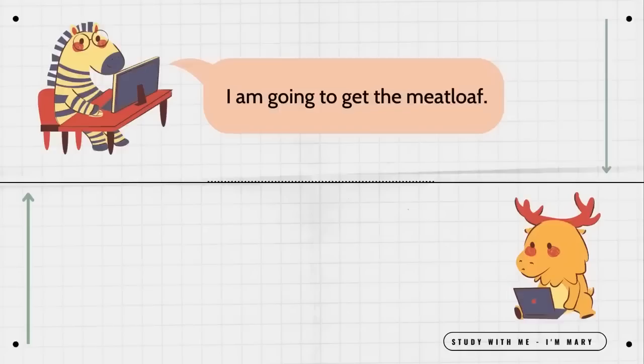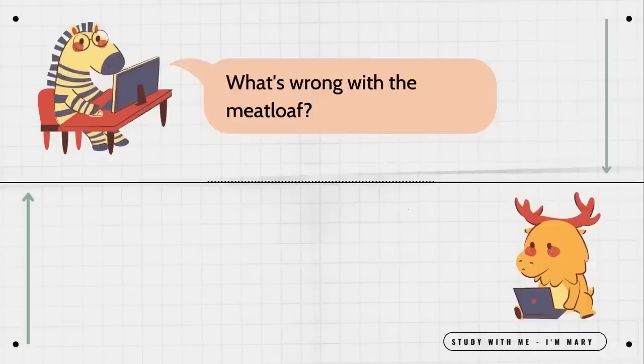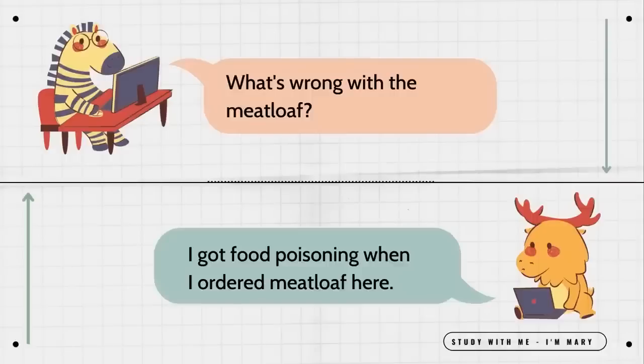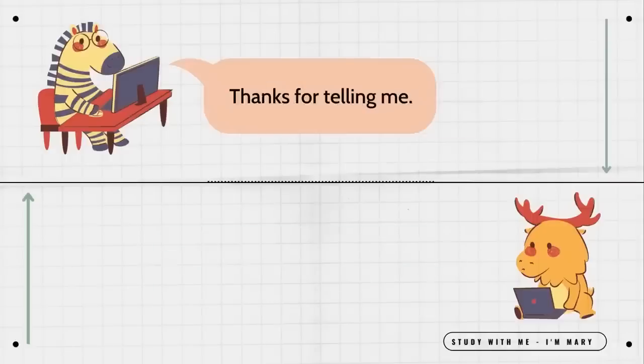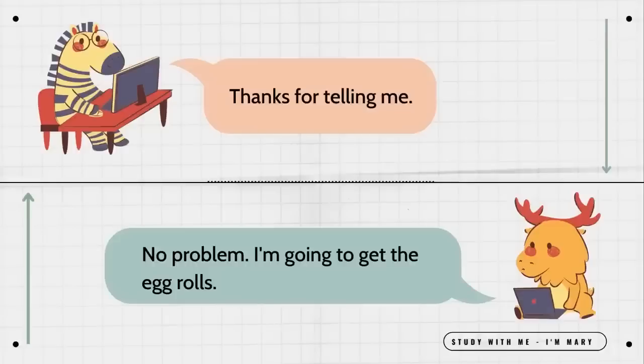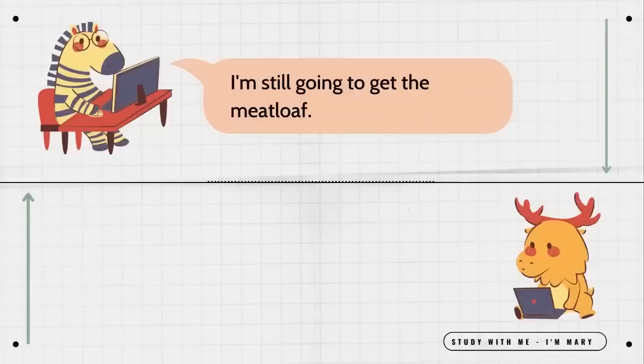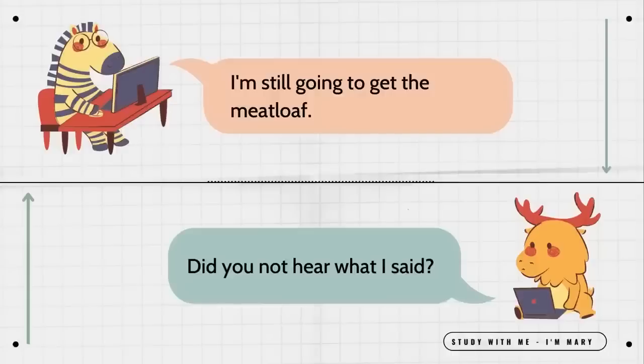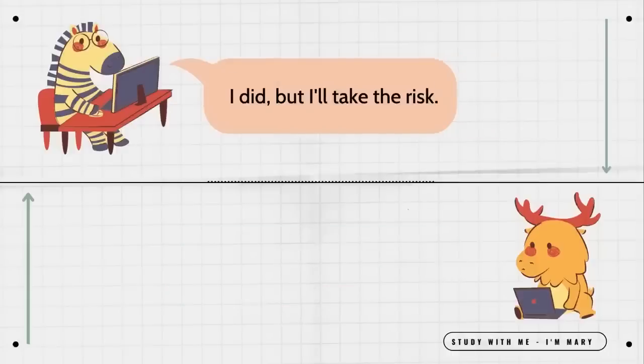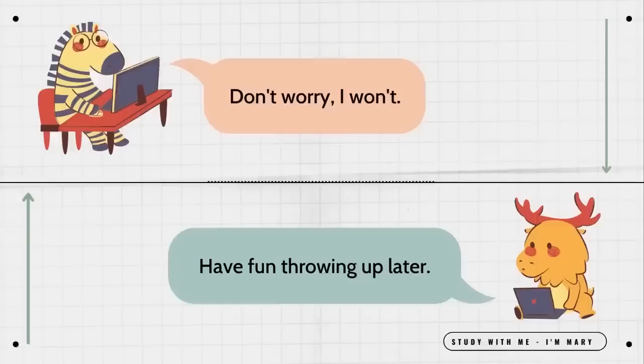I am going to get the meatloaf. Get anything but the meatloaf. What's wrong with the meatloaf? I got food poisoning when I ordered meatloaf here. Thanks for telling me. No problem. I'm going to get the egg rolls. I'm still going to get the meatloaf. Did you not hear what I said? I did, but I'll take the risk. Don't say I didn't warn you. Don't worry. I won't. Have fun throwing up later.